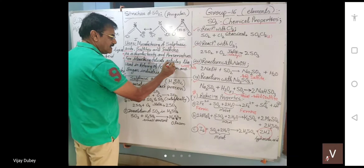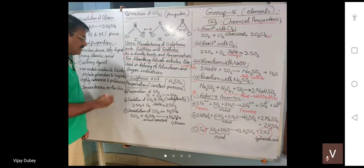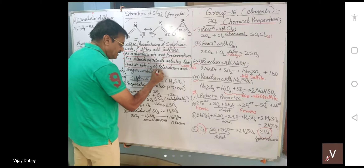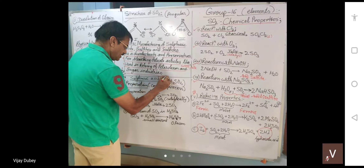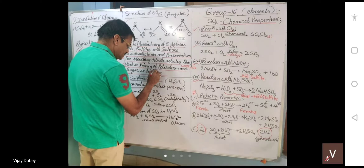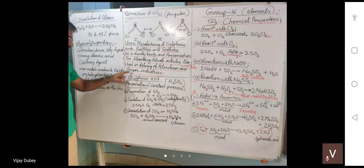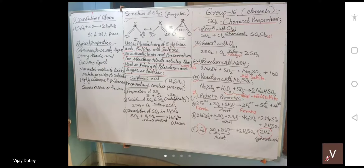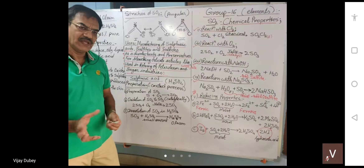Sulfur dioxide is used for bleaching delicate articles like wool and silk. It is also used in the refining of petroleum and in the sugar industry. In sugar refining, SO2 is used — it gets converted to SO3, which then mixes with water to form sulfuric acid.